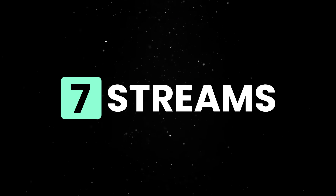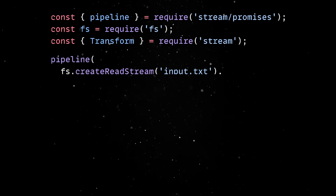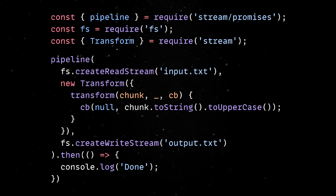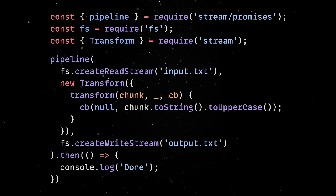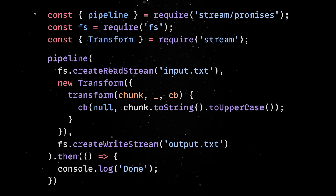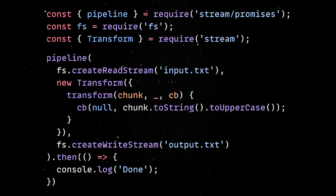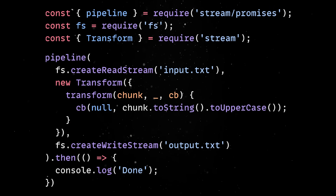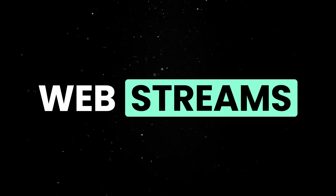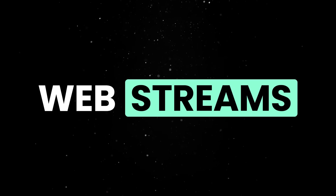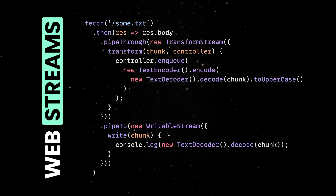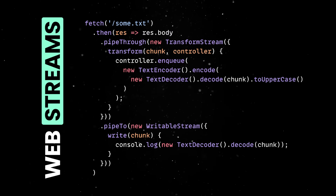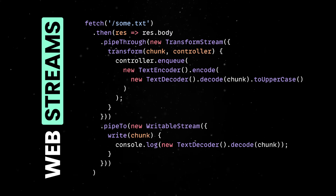Streams, one of Node's core strengths, also got the attention they deserved. The pipeline API wraps streams in a promise-based interface that automatically manages errors and cleanup, removing a major source of frustration in older versions of Node where stream errors could crash entire apps if mishandled. Combined with support for web streams, Node now allows you to create or consume streams that work the same way in browsers and on the server, which is essential for apps running in hybrid or edge environments.